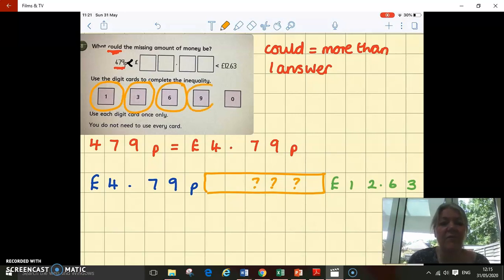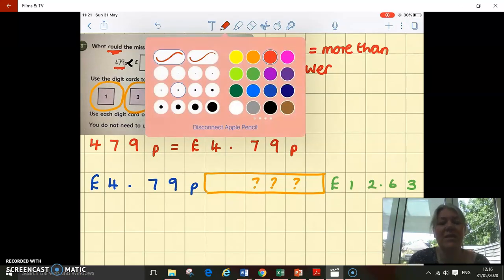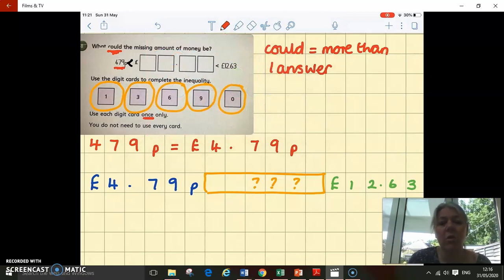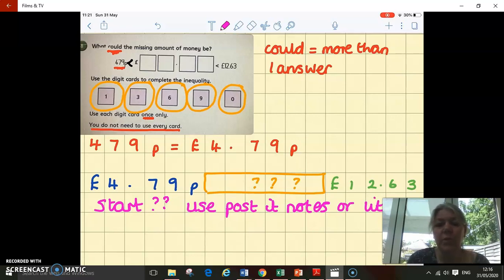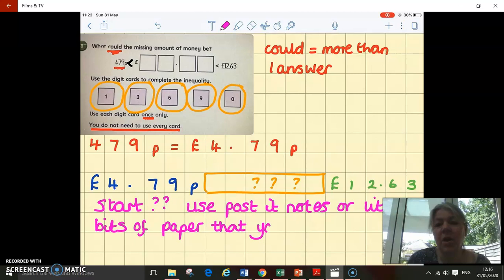We've got these five digit cards to help us: a one, three, six, nine, and zero. You can only use each card once, and you don't have to use every card. So where am I going to start? Use post-it notes is a really good top tip. Put your digits on little bits of paper so you can move them around. It's really helpful when there's more than one answer.